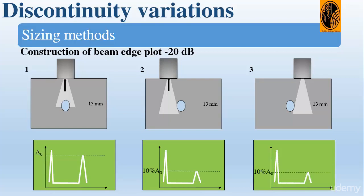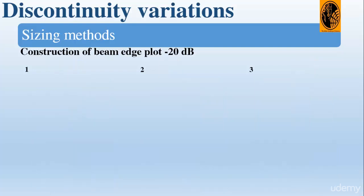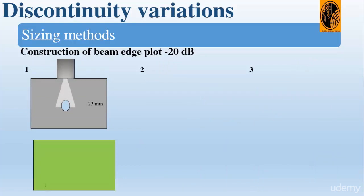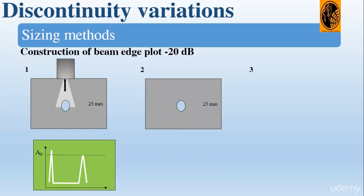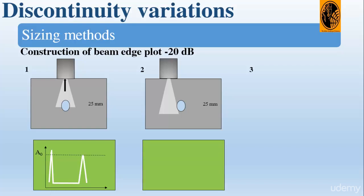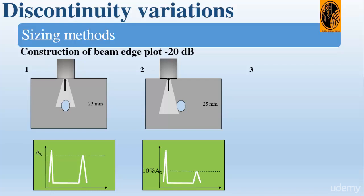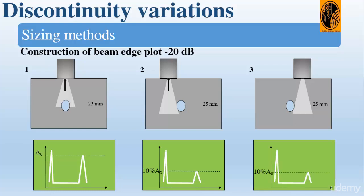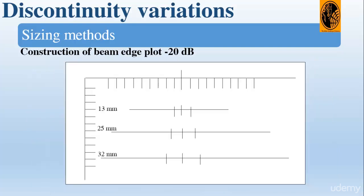We can do the same steps for the 25 mm block. First, find the hole with the zero degree probe, maximize the signal to full screen height, and mark the center of the probe. Second, move to one side of the hole and get 10% of the initial amplitude, then mark the position. Third, move to the other side, get 10% of the initial amplitude, and mark the position. This is the piece of graph paper we are going to use for the construction of the beam plot.